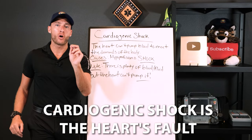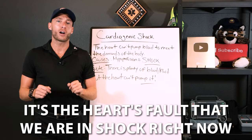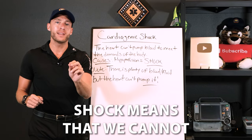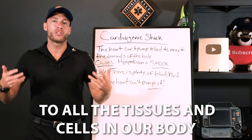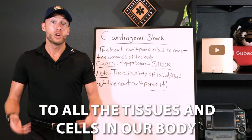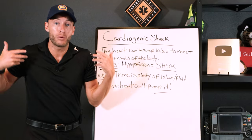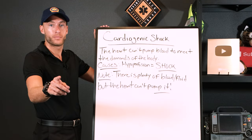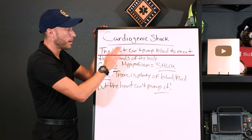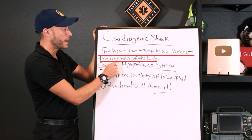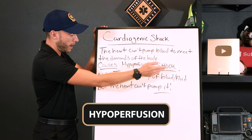Cardiogenic shock is the heart's fault. Shock means we cannot get enough blood and oxygen to all the tissues and cells in our body. Shock is hypoperfusion — it means we cannot perfuse and get blood and oxygen to all our cells. Cardiogenic shock is when the heart cannot pump blood to meet the demands of the body. This causes hypoperfusion — shock.